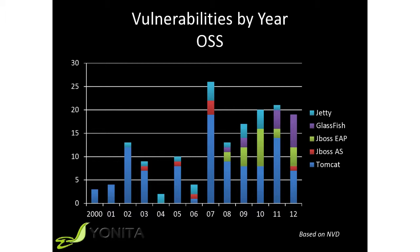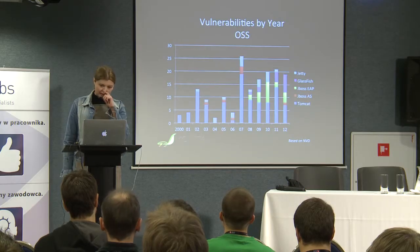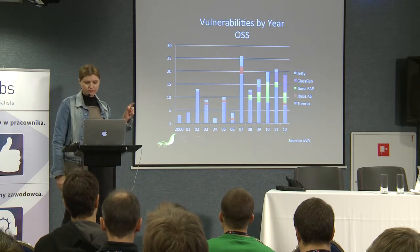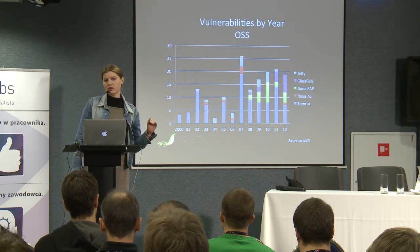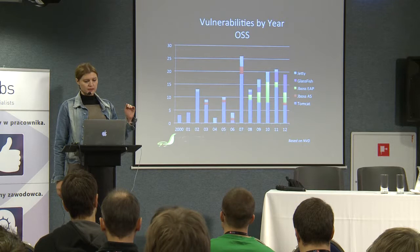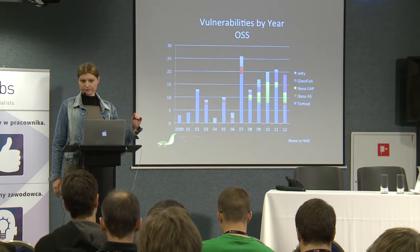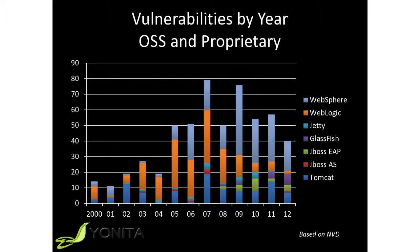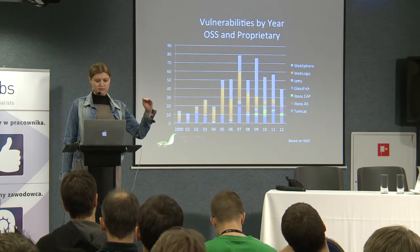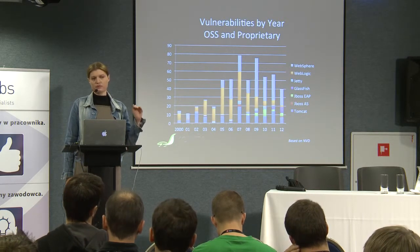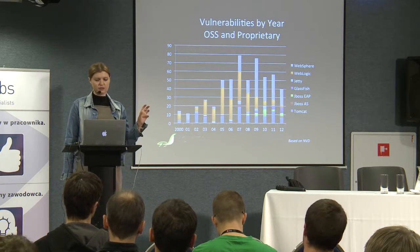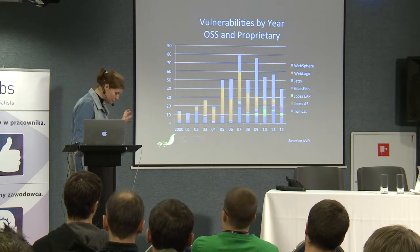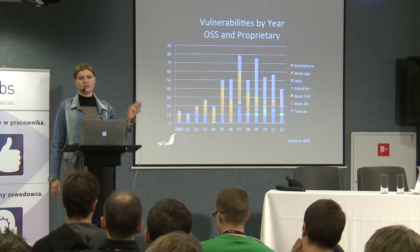Here we see the accumulated statistics of vulnerabilities by year for open source software. During the last five years the trend is more or less stable — between 15 and 20 vulnerabilities found per year — and still Tomcat is the leader. When we add commercial software like WebLogic or WebSphere, the total number of vulnerabilities found per year is around 40 to 50, with a huge portion going to WebSphere.